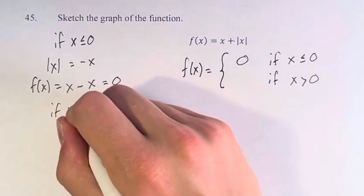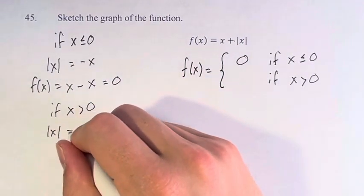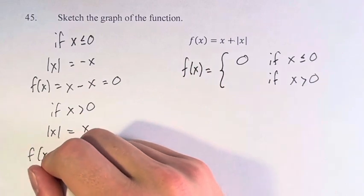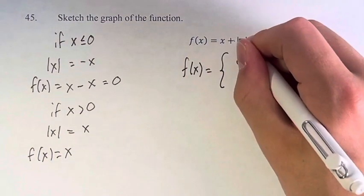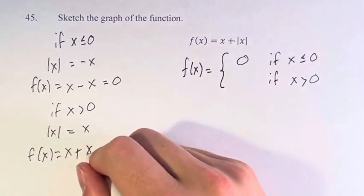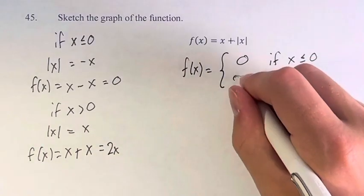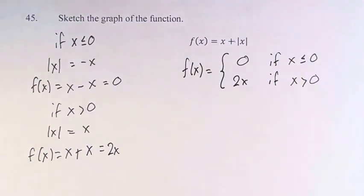If x is greater than 0, the absolute value of x is just x, and therefore f(x) is equal to x plus the absolute value of x is just another x. x plus x is 2x. Therefore, the value of f(x) is 2x if x is greater than 0.